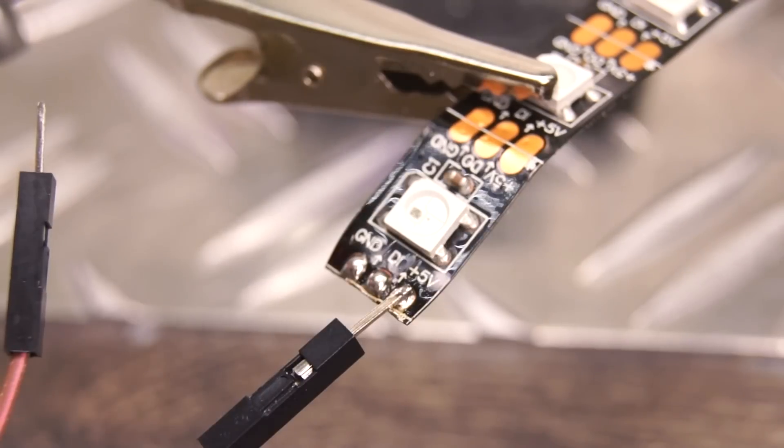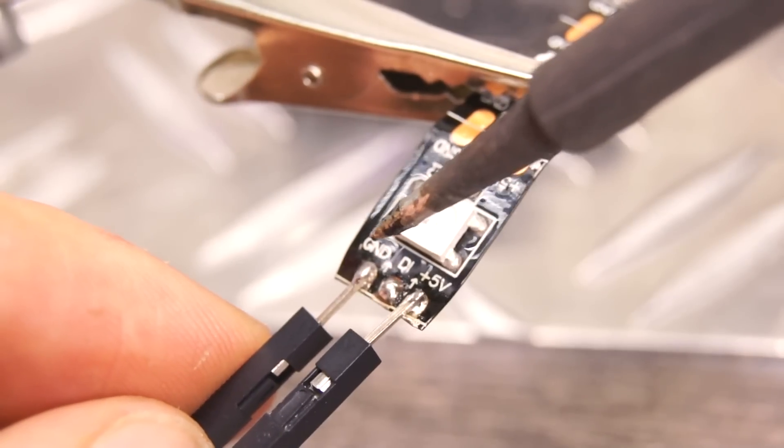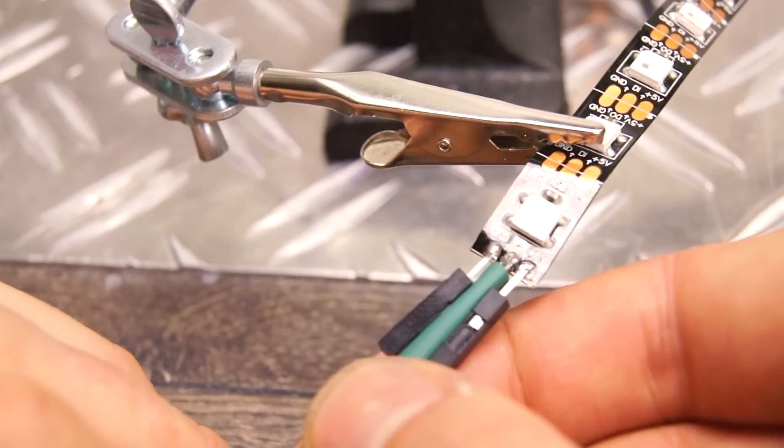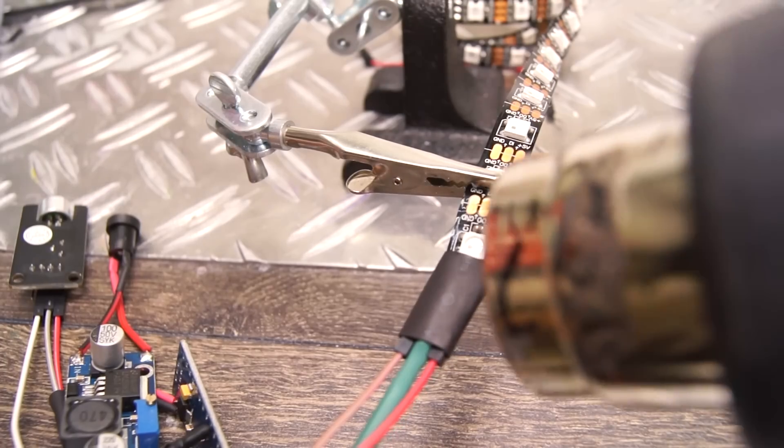Now we can solder them to the LED strip, making sure none of the wires touch each other and that all are in the right position. Move the shrinking tube into position and give it a good go with the heat gun.